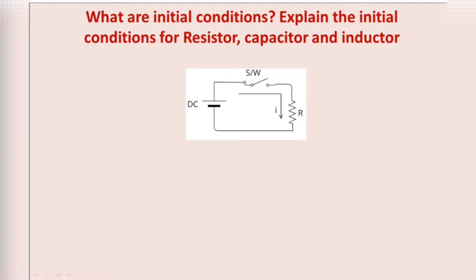When the switch is closed at t=0, the current I flowing in the circuit is given by I = V/R. At t=∞, the current flowing in the circuit is also I = V/R. So both conditions — at t=0 and t=∞ — give the same current V/R through the resistor.